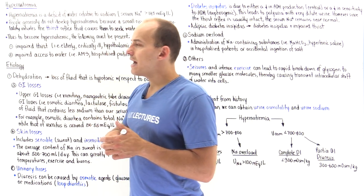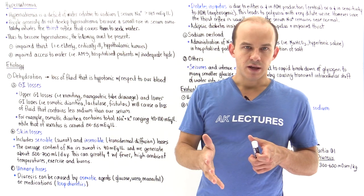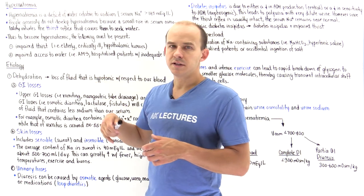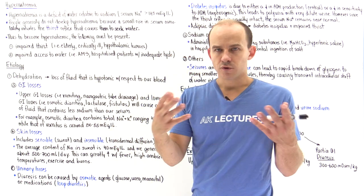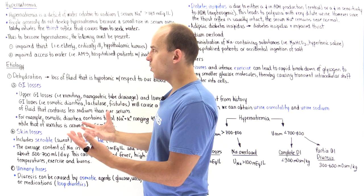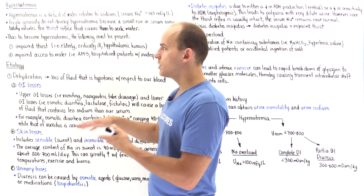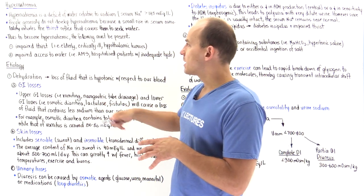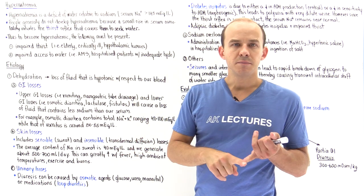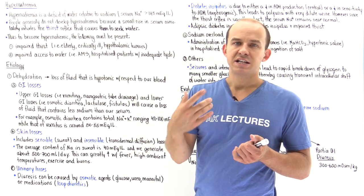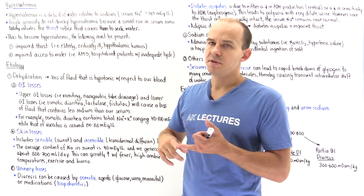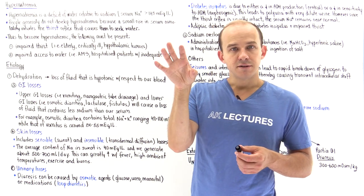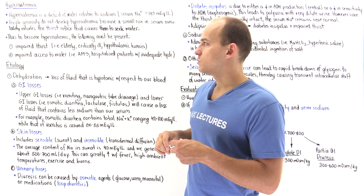Either we have an impaired thirst reflex. This is commonly found in the elderly population — for an unknown reason, as we grow older our thirst reflex decreases. It's also found in critically ill and hospitalized patients, as well as in people with hypothalamic tumors that can affect the osmoreceptors.